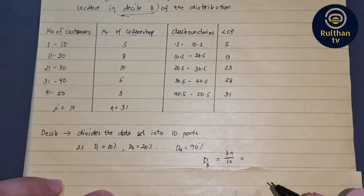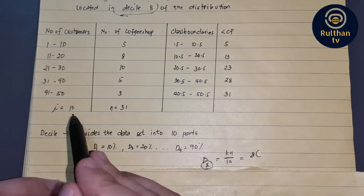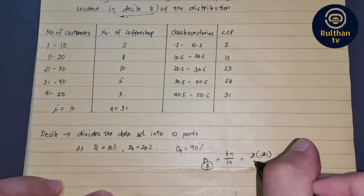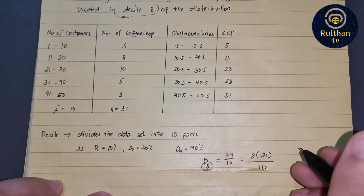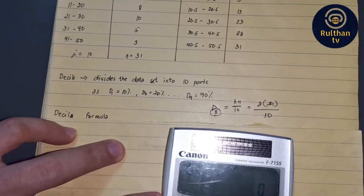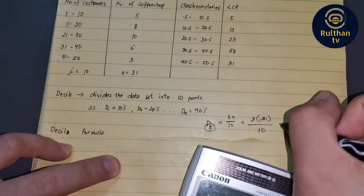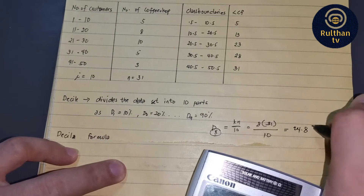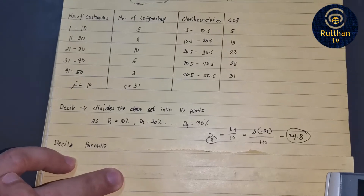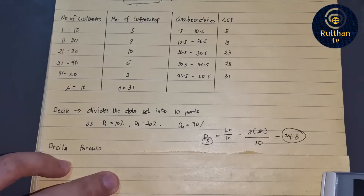Our K in this case is 8, and our N is 31. So we have 8 times 31 divided by 10. Using our calculator: 8 times 31 divided by 10 gives us 24.8. Now, 24.8 is not the value of D sub 8, but rather it is the location where we will find the actual value of decile 8.